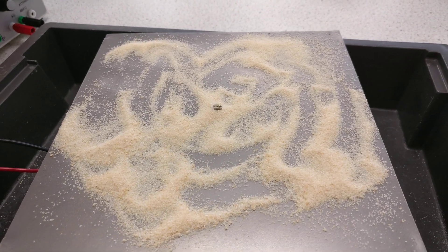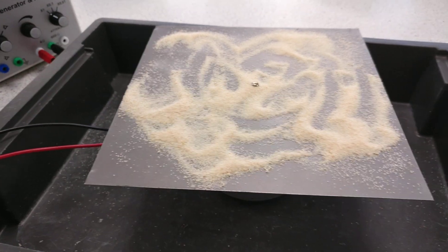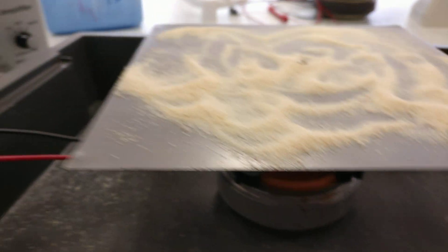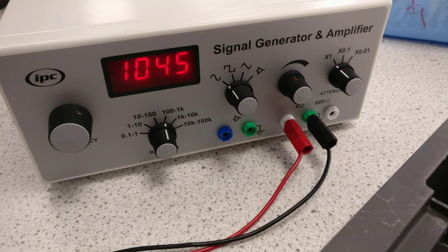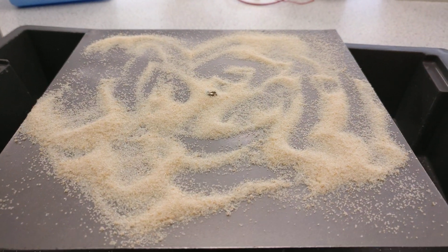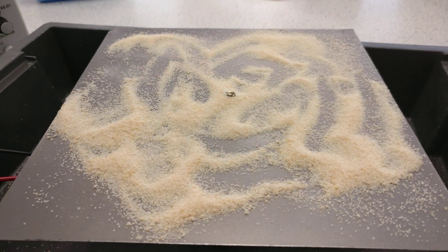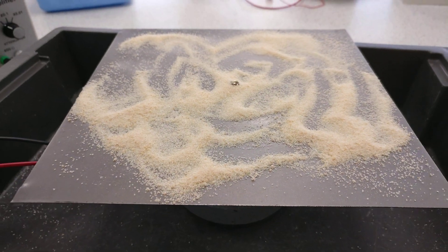A little bit of physics fun with an oscillating plate. We've got underneath a vibration generator, a signal generator starting at about a thousand Hertz. We've got some semolina. Let's see what's going to happen as we change the frequency.